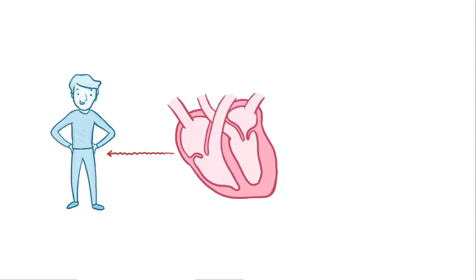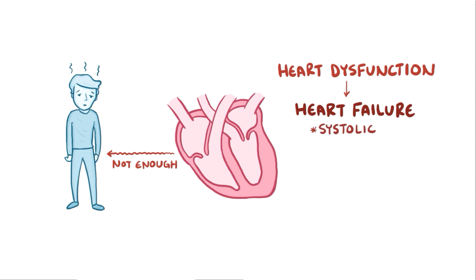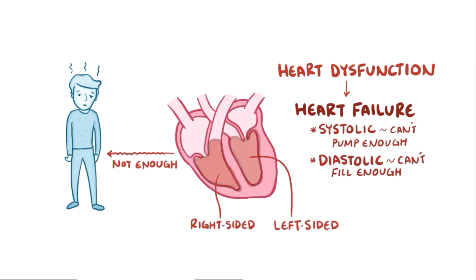When the heart can't pump enough blood to meet the body's demands, it's initially called heart dysfunction, and can worsen to a point where it's called heart failure. This can happen in two ways: either systolic heart failure, where the ventricles can't pump blood hard enough during systole, or diastolic heart failure, where not enough blood fills the ventricles during diastole. Heart failure can affect the right ventricle, the left ventricle, or both ventricles — so someone might have right-sided, left-sided, or biventricular heart failure.